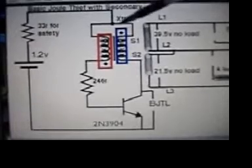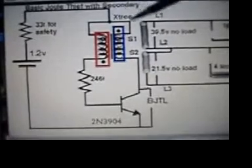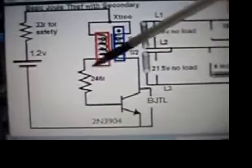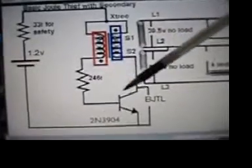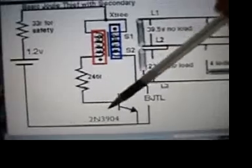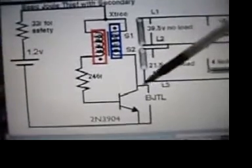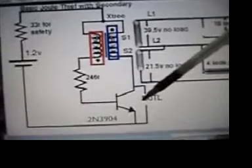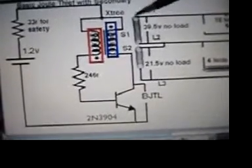This is the Xtree, that's the name of the toroid that we're using. The resistor is set at 246 ohm. It's the 2N3904 transistor. The basic jewel thief light is removed and we have two secondaries wound.